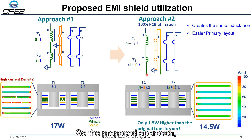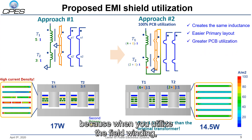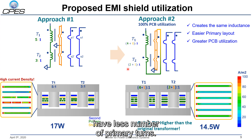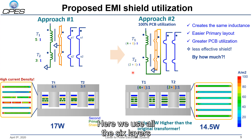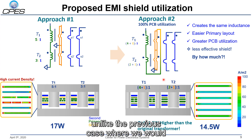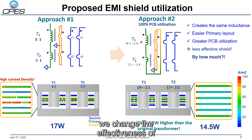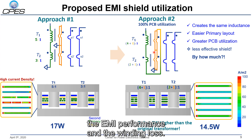With the proposed approach, we create the same inductance, have an easier primary layout because utilizing the shield winding reduces the burden on primary turns, and achieve greater PCB utilization using all 6 layers as part of the winding. However, one trade-off is that we change the effectiveness of the shield because the voltage on the shield layers is altered. The question is by how much, and this becomes a trade-off between EMI performance and winding loss.